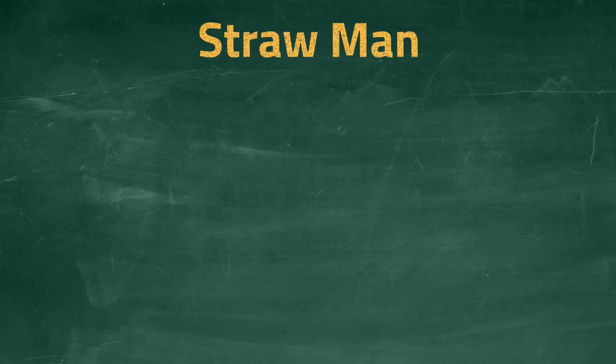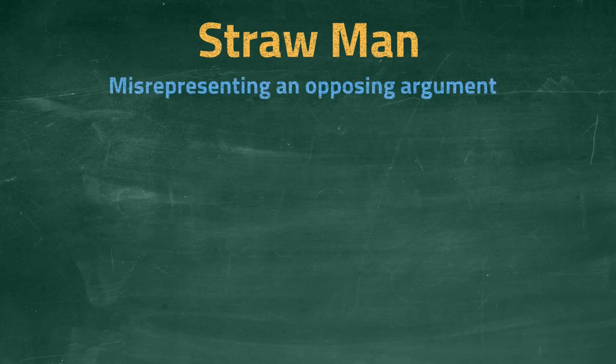Fallacies are a mistake in how we think. The straw man fallacy typically occurs in a debate or discussion with multiple people. It happens when one person mischaracterizes another's argument. This mischaracterization makes the argument weaker and thus easier to counter, giving the impression that you have won the debate.